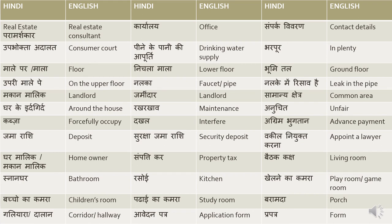Vakil niyukt karna means appoint a lawyer. Kabja means forcefully occupy. Dakhal means interfere. Agrim bhuktan means advance payment — you can also translate down payment as agrim bhuktan, that won't be wrong.